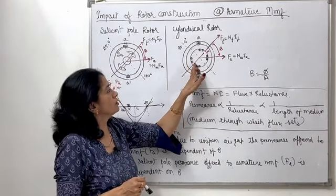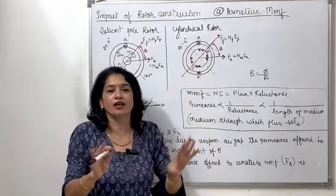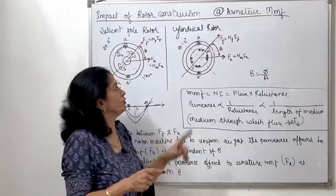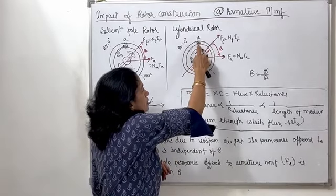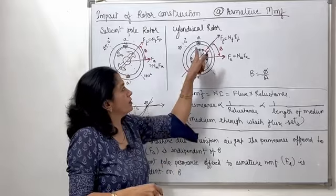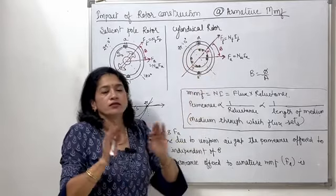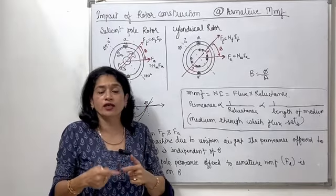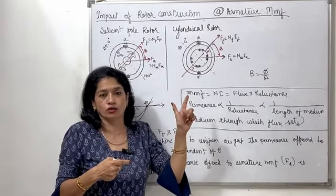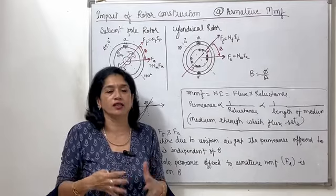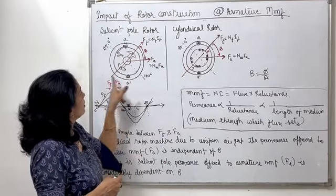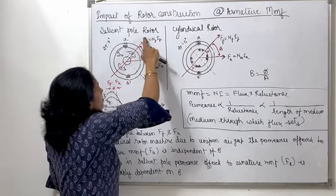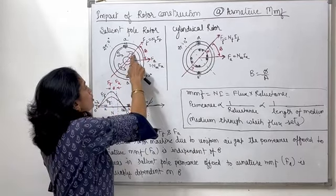In the salient pole machine, we have concentrated winding bound over the poles, creating north and south poles, whereas in the cylindrical machine the entire remaining periphery is filled with slots and distributed DC field winding. A-phase is being shown, and the direction of current in conductor A and A-dash at specific locations will be explained shortly.